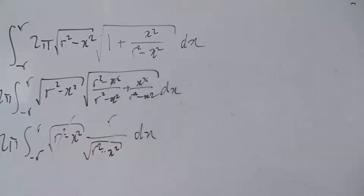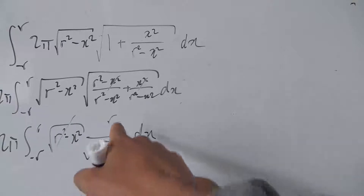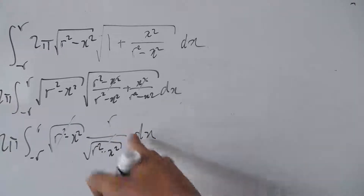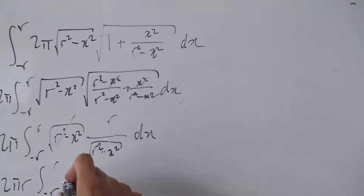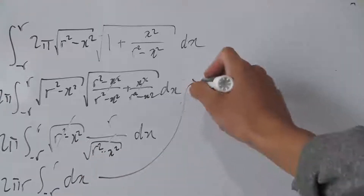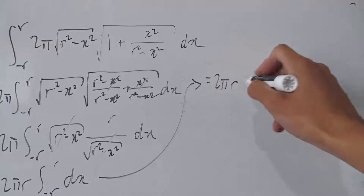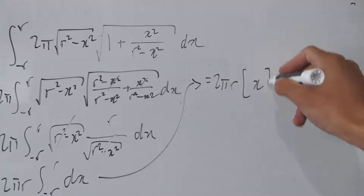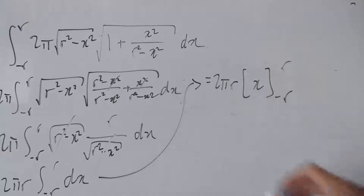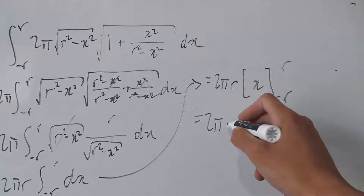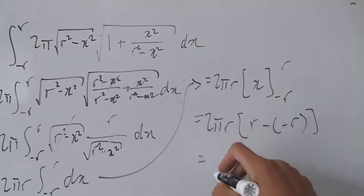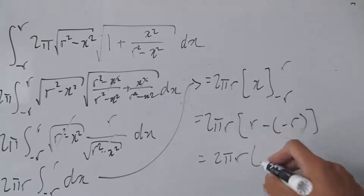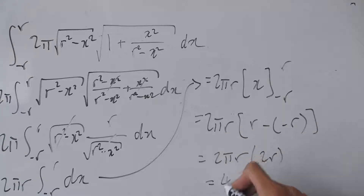Because we have a square and a square root, we get r over the square root of r squared minus x squared. The square root of r squared minus x squared in f of x and the square root of r squared minus x squared in the denominator cancel, leaving us just integrating r with respect to x — a constant. So we have 2πr times the integral from negative r to r of dx, which gives 2πr times x evaluated from negative r to r, which is 2πr times 2r.